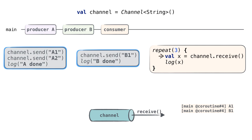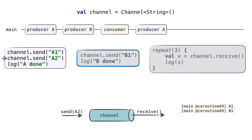Now the consumer again calls receive on the next loop iteration. This time, however, the channel is empty and there are no send calls ready to send values. Thus the receive call gets suspended — the consumer coroutine gets suspended. Now two coroutines are ready to be resumed, but producer A was first, so it gets resumed first.